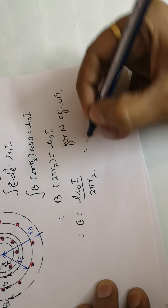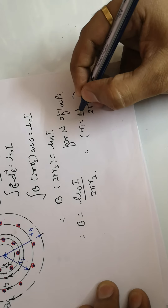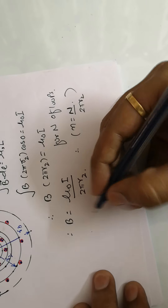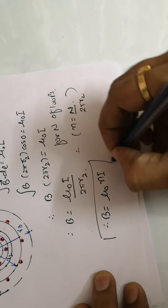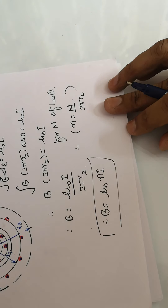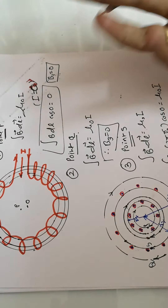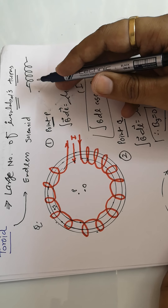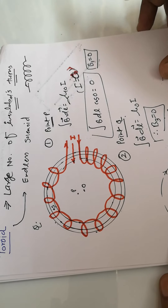For N total turns, the number of turns per unit length (or per radius) is n = N / 2πr₂, just as we discussed for the solenoid. Substituting this, the equation becomes B = μ₀nI. This is the same equation we learned for the solenoid. There is no difference between the solenoid and toroid from an equation standpoint, though the practical arrangement differs — a toroid is an endless number of turns wound on a current-carrying circular loop.